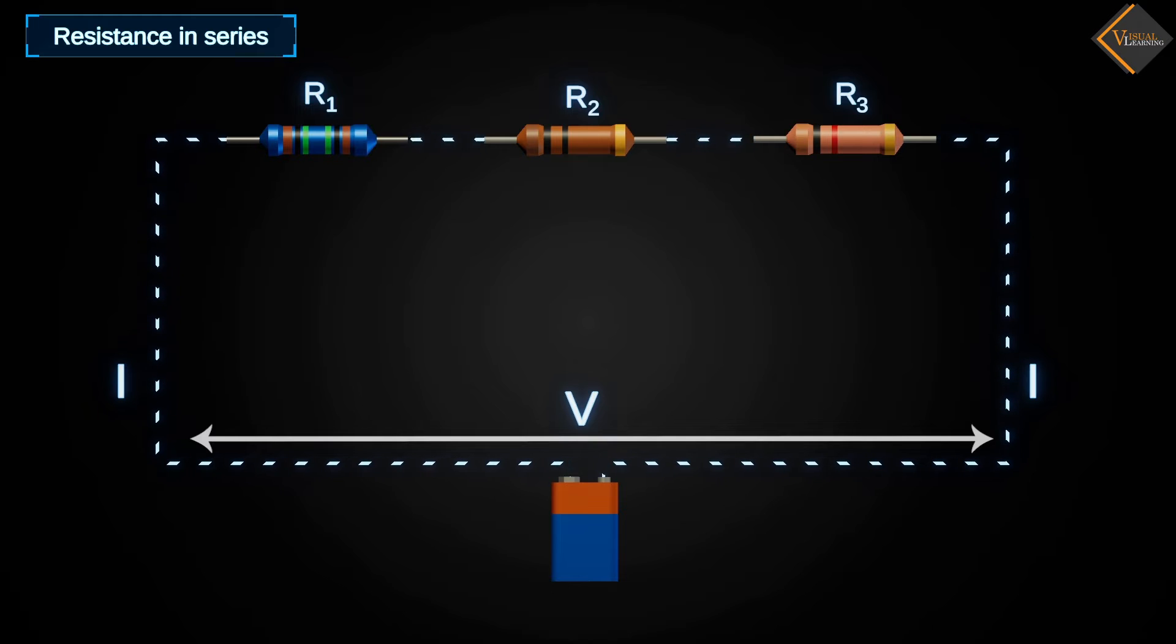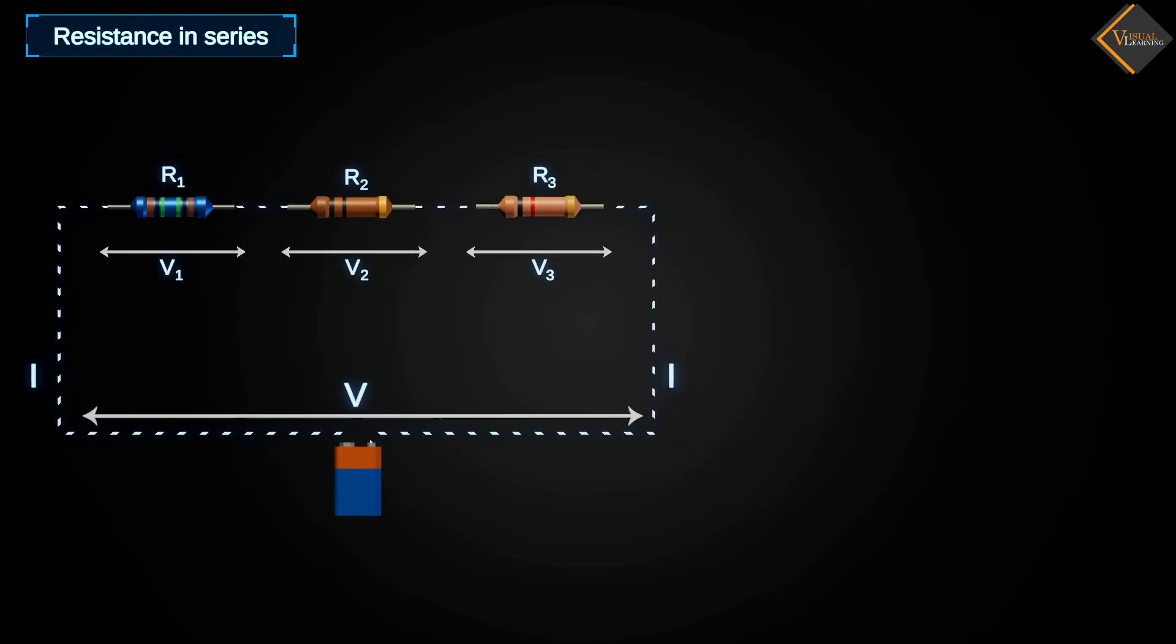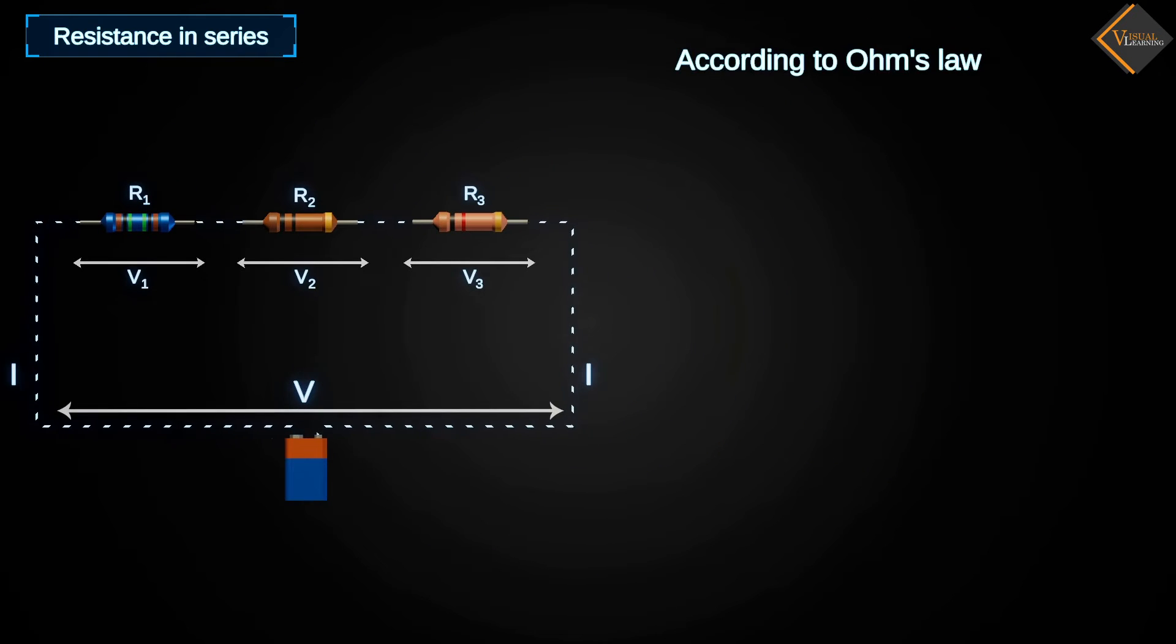Let's call these voltages V1, V2, and V3. According to Ohm's law, the value of voltage is equal to the product of current and resistance. Using this equation, we can find V1, V2, and V3.